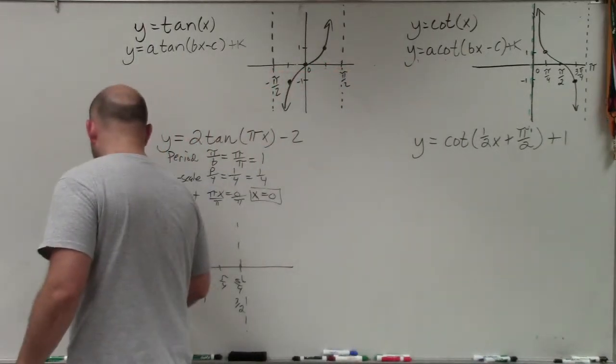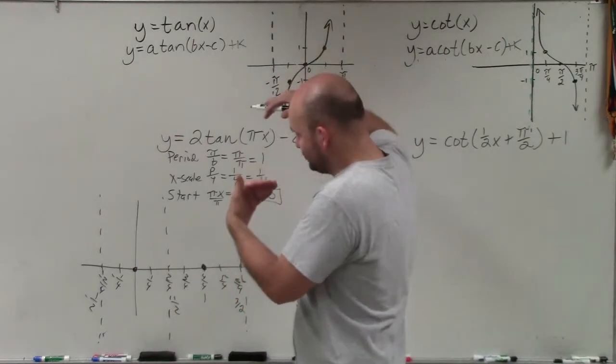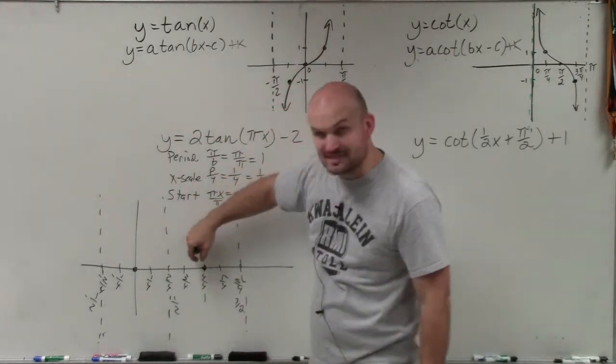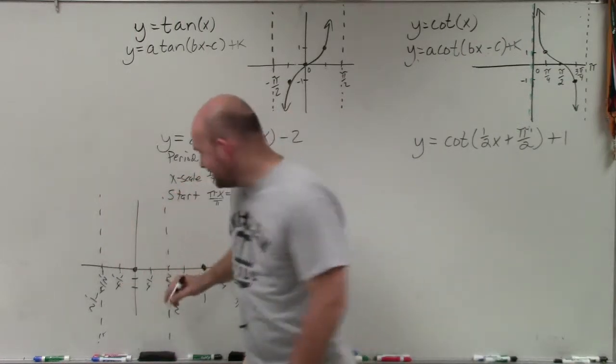So we basically have two intercepts here. But remember, instead of starting at 0, I'm taking this whole graph and I'm shifting it down 2 units. So I'm actually not going to be intersecting at the x-axis. I'm actually going to be intersecting at negative 2.